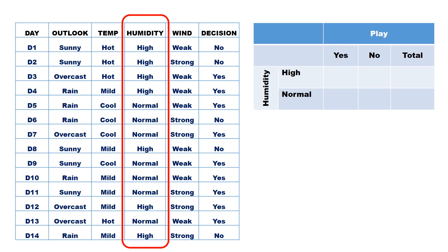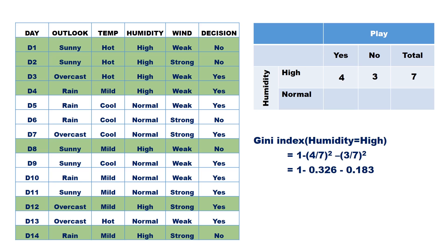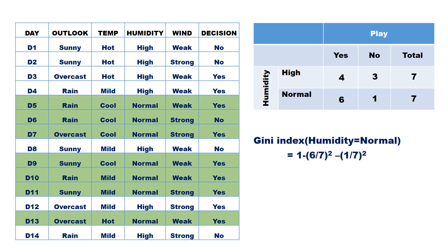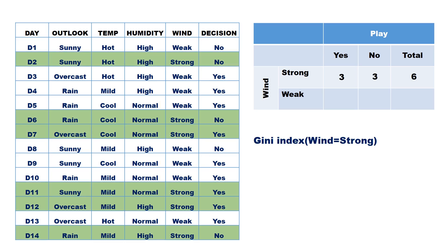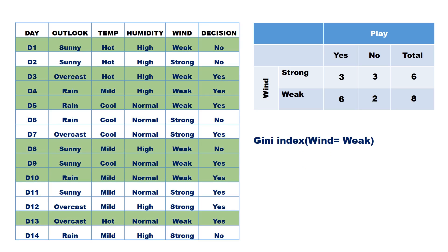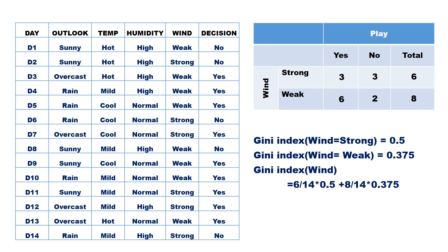Similarly, we compute the Gini index for Humidity. Gini index for humidity=high is 0.489, and Gini index for humidity=normal is 0.244. Hence, the Gini index for Humidity is (7/14)×0.489 + (7/14)×0.244, which equals 0.367. Next, we compute the Gini index for Wind. Gini index for wind=strong is 1 minus (3/6)² minus (3/6)², which equals 0.5. Gini index for wind=weak is 1 minus (6/8)² minus (2/8)², which equals 0.375. Hence, the Gini index for Wind is (6/14)×0.5 + (8/14)×0.375, which equals 0.428.